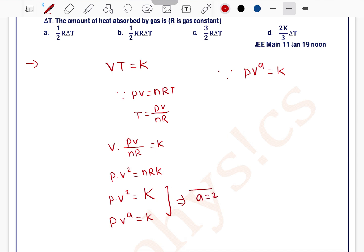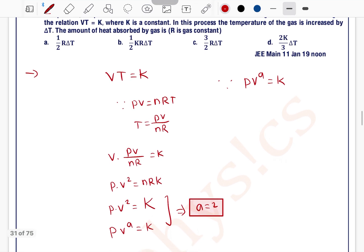P into V to the power 2 equals again it is a constant. So we can write P into V to the power a equals constant. On comparing these two, we will get a equals 2.